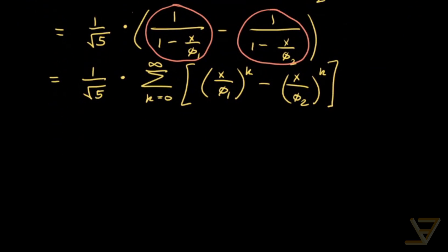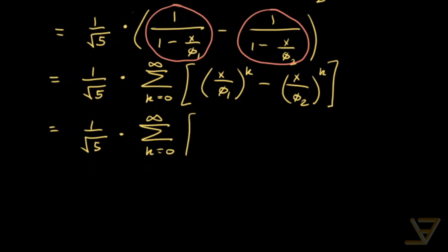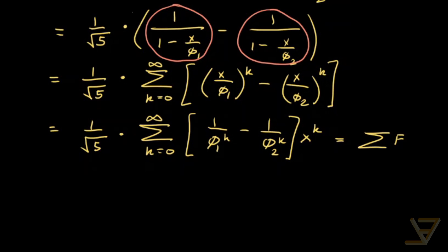Now we just pull out the x to the k terms. We get 1 over square root of 5 times the sum from k equals 0 through infinity of 1/φ₁^k minus 1/φ₂^k, times x to the k. Remember, this is equal to the sum of the kth Fibonacci number times x to the k, from k equals 0 through infinity.